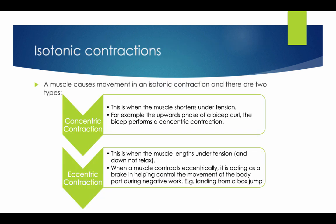Isotonic contraction: a muscle causes movement in an isotonic contraction, and there are two types. A concentric contraction is when the muscle shortens under tension — for example, during the upward phase of a bicep curl, the bicep performs a concentric contraction. An eccentric contraction is when the muscle lengthens under tension and does not relax. When a muscle contracts eccentrically, it is acting as a brake, helping control the movement of the body during negative work — for example, landing from a box jump.